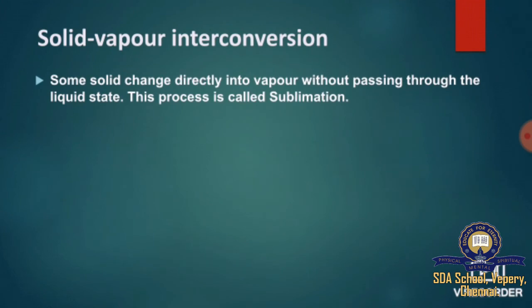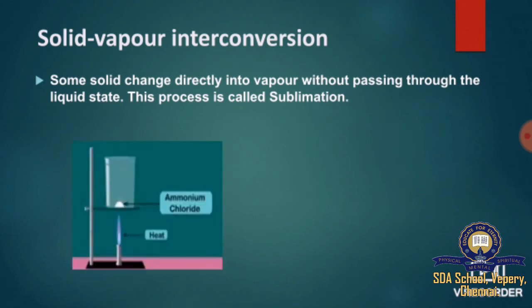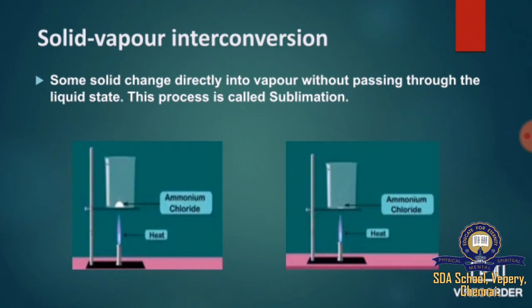Next, we move on to the topic of solid-vapor interconversion. Some solids change directly into vapor without passing through the liquid state. This process is called sublimation. When we take any solid substance, it can be directly converted into vapor without passing into the liquid state. For example, ammonium chloride in solid state, when heated, is directly converted into vapor state without passing through the liquid state.